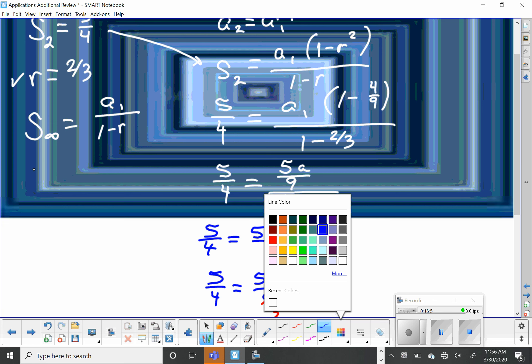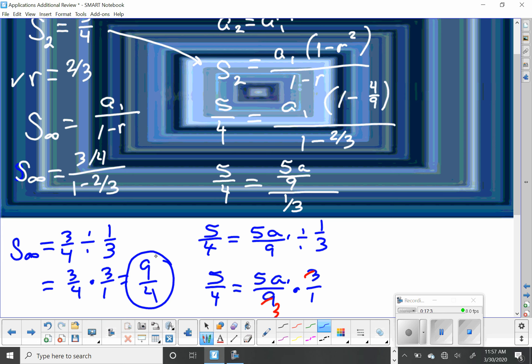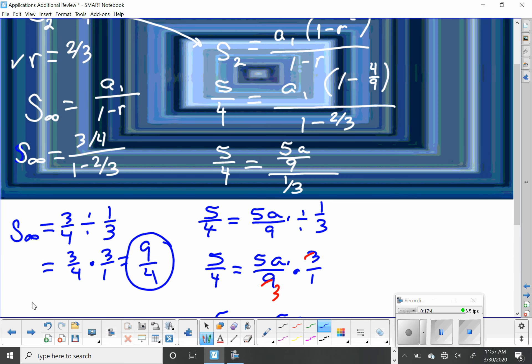Now I'm going to use 3 fourths in this formula. S sub infinity equals 3 fourths over 1 minus 2 thirds. That's 3 fourths divided by 1 third. 3 fourths times 3 over 1 is 9 fourths. That's the sum of the infinite series, given that the sum of the first two terms is 5 fourths. And it makes sense, 9 fourths is a little bit more.